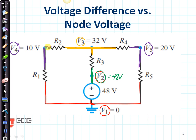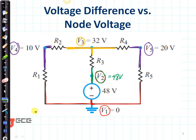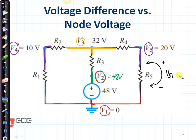So I've circled all of the node voltages. Difference voltages are the voltages that are across a resistor like this. We have V5 on the top — I'm going to put a plus sign there — and V1 on the bottom. So this voltage difference is going to be V5,1, which is going to be equal to V5 minus V1. Let's put some numbers to that: V5 is 20, and V1 is 0, so this is 20 volts.